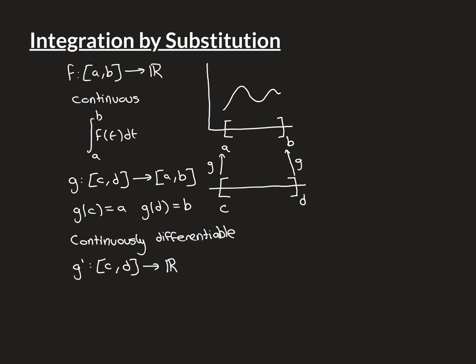If g is differentiable everywhere over c, d and the derivative g prime is continuous everywhere over c, d, then we say g is continuously differentiable over c, d. Note this is a stronger criterion than just differentiable alone — there are examples of functions differentiable everywhere over an interval where the derivative is not continuous. We need not just differentiable, but continuously differentiable over the entire interval c, d. Those are the criteria needed for integration by substitution to work.